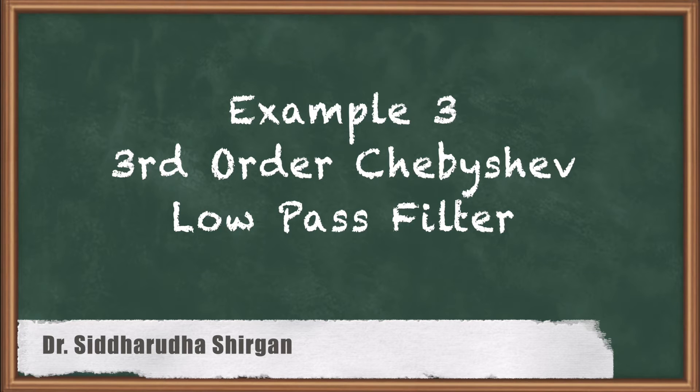In this video, we are going to design equal ripple, or it is also called Chebyshev low pass filter, for 0.5 dB ripple.